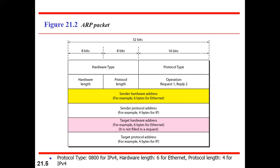ARP messages use a relatively simple format. The total packet size is variable since the length of logical and physical addresses may vary on different networks. The first field is hardware type, a 16-bit field defining the type of network on which ARP is running. Each LAN has been assigned an integer based on its type — for example, Ethernet has type 1.